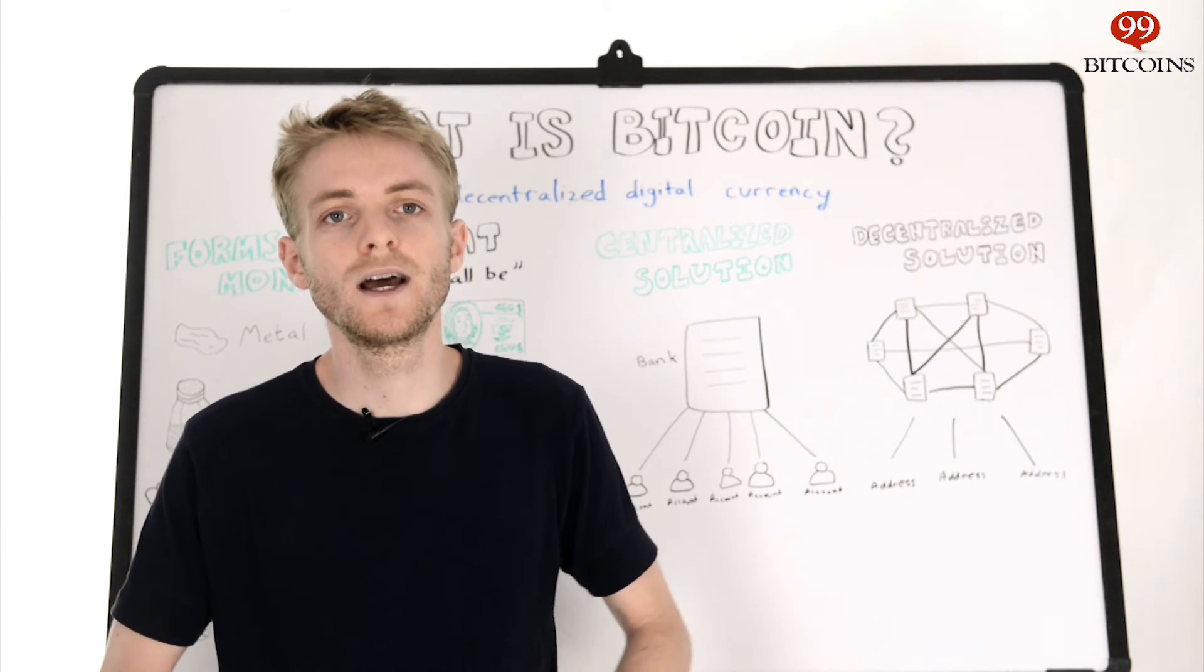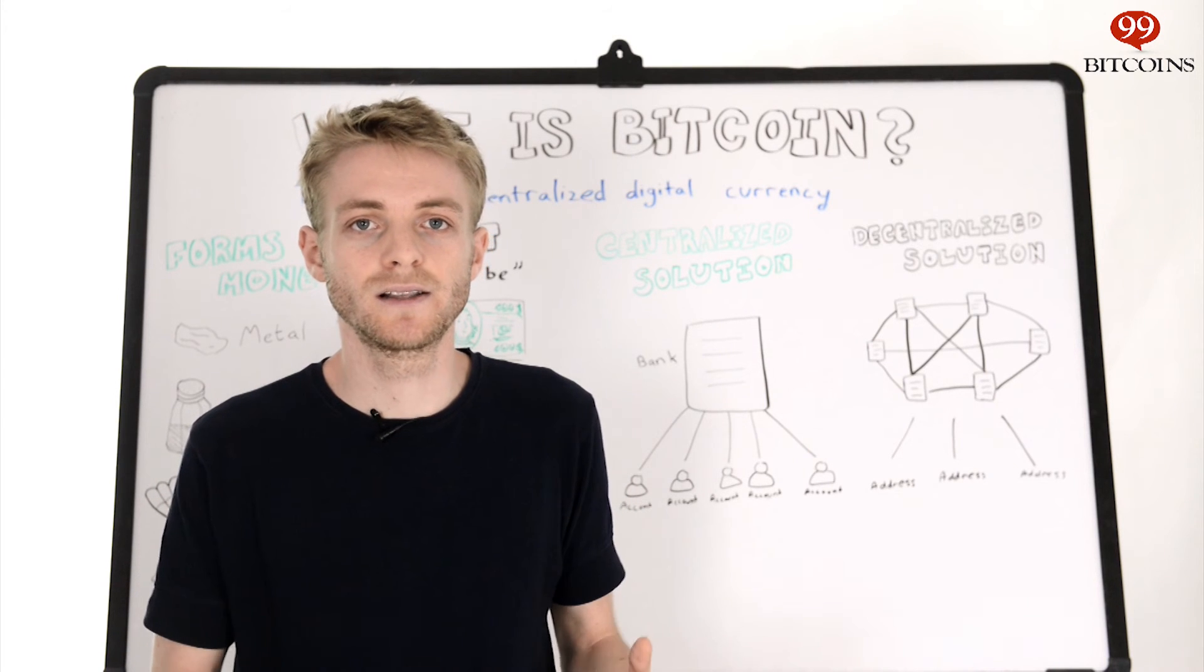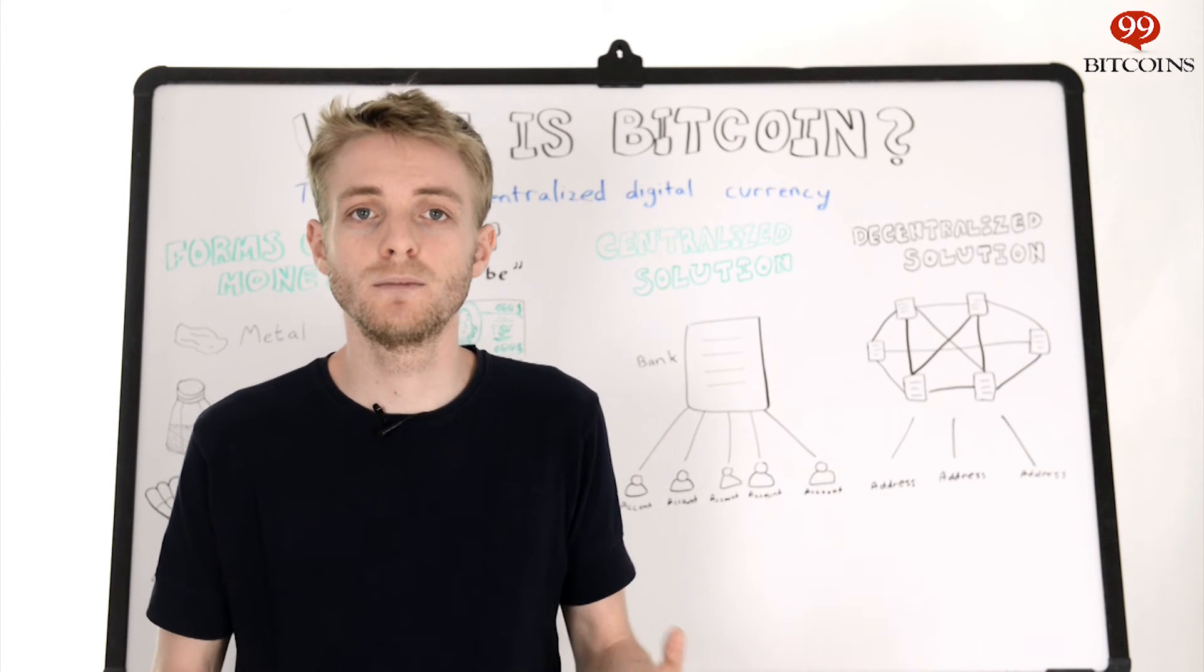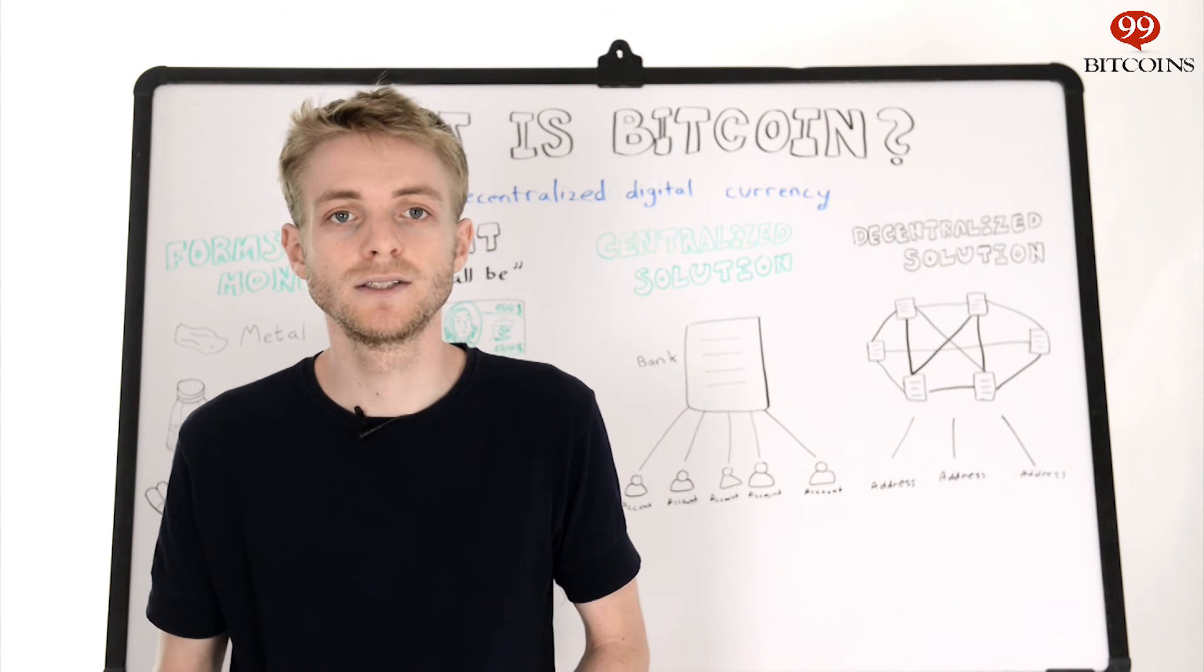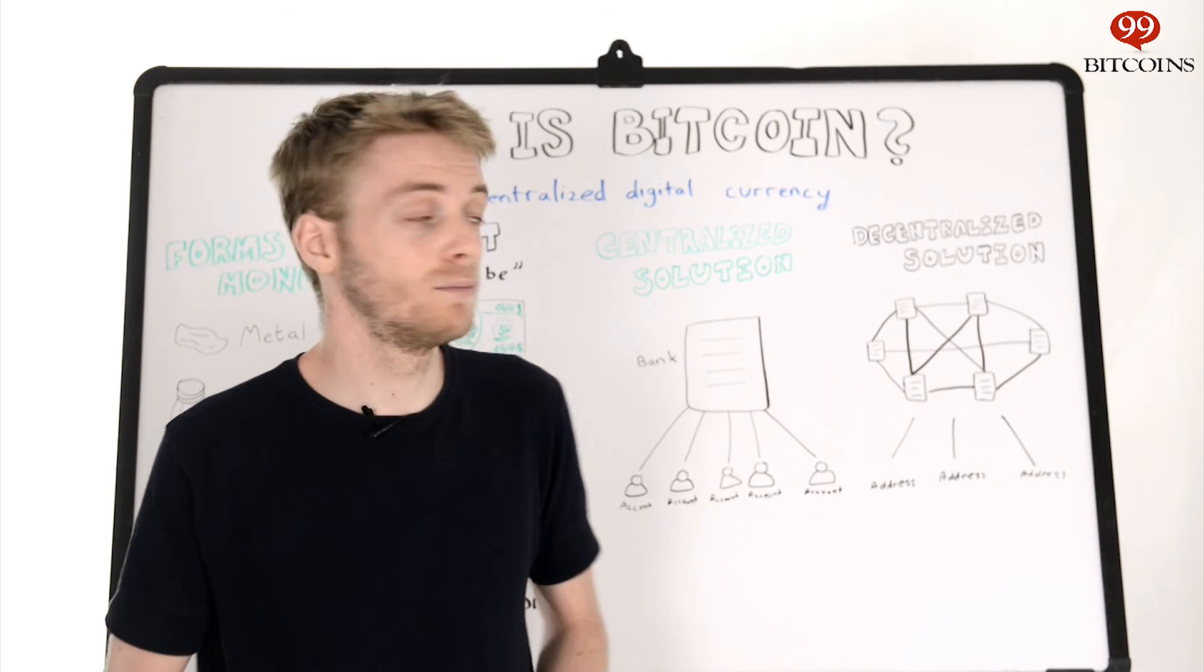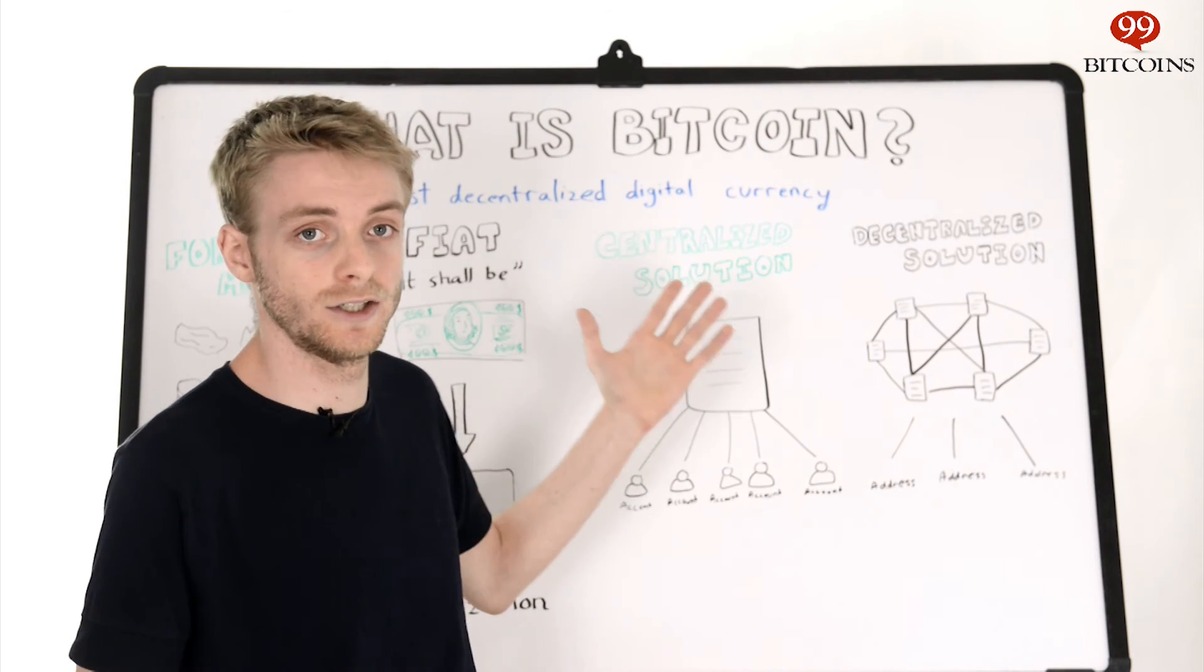In Bitcoin, the dictionary that helps everyone stay on the same page is the ledger, and this ledger is called the blockchain. So now that we understand how Bitcoin is digital and how Bitcoin is decentralized, we can finally say confidently that Bitcoin is the first decentralized digital currency.